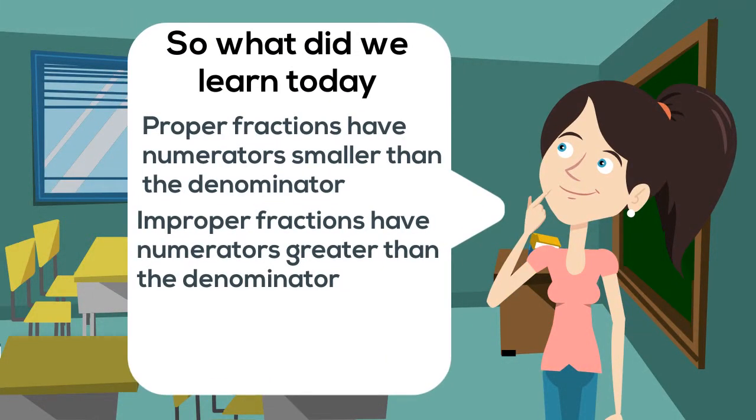So, what did we learn today? We learnt that proper fractions have numerators smaller than the denominator and improper fractions have numerators greater than the denominator. So, don't forget these two fractions. They are the main in the family.